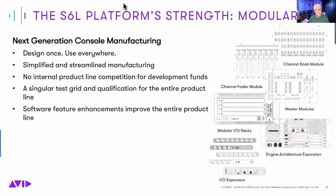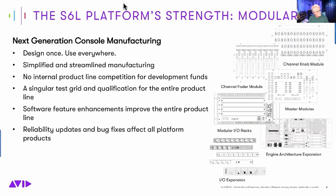Software feature enhancements improve the entire product line. If we have this entire product line built on this platform working on one software platform, as we increase features in that software, it's actually improving all of the products in the line, not just one given product. As things improve, every product improves and the whole thing pushes together in advancement. Same thing applies for reliability — if we run across a bug fix or a hardware problem, once we fix it, we've fixed everyone in the line. All of the products benefit by getting fixed. It's not like we have one development stream for one console while others continue to work — once we put a team on the fix, it repairs everything in the line.